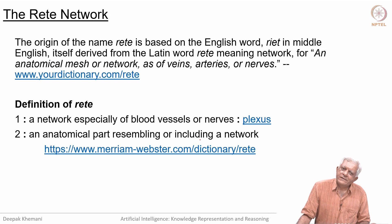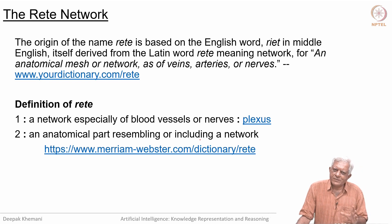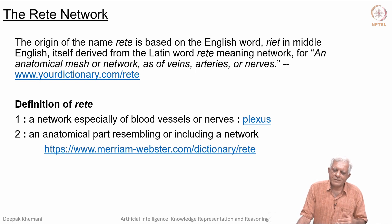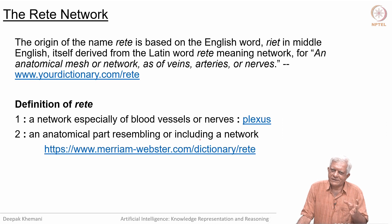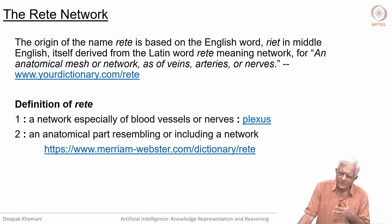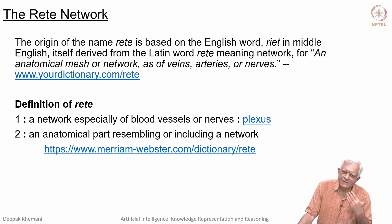Welcome back. We have just looked at the broad idea of a forward chaining rule-based production system. We have seen how the memory is organized in terms of working memory elements, how rules are expressed as a set of patterns related to a set of actions. We have looked at how match is done, and once the match is over, how you pick a rule from all the matching rules and go through the cycle of match, resolve, execute.